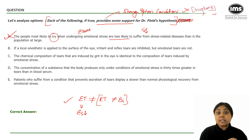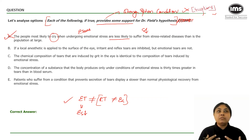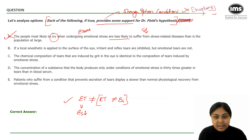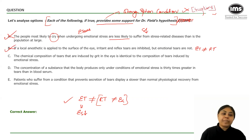Option B: 'If a local anesthetic is applied to the surface of the eye, reflex tears are inhibited but emotional tears are not.' Applying an anesthetic removes sensation from external irritation, so RT doesn't come — but ET still does. This confirms that ET is different from RT, which is exactly what Dr. Field argues. This supports the hypothesis — tick and cancel.